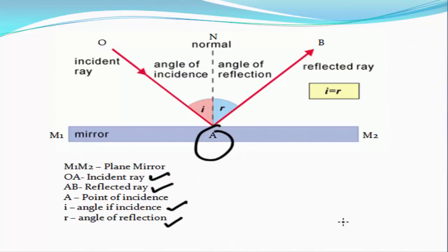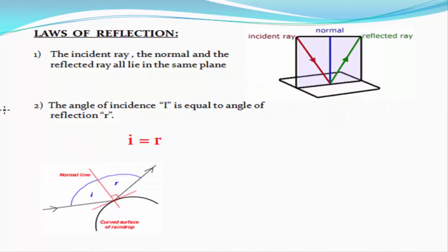Now what does the law of reflection say? The law of reflection says the incident ray, the normal, and the reflected ray all lie in the same plane, which is clear by this diagram. The angle of incidence I is equal to the angle of reflection R.